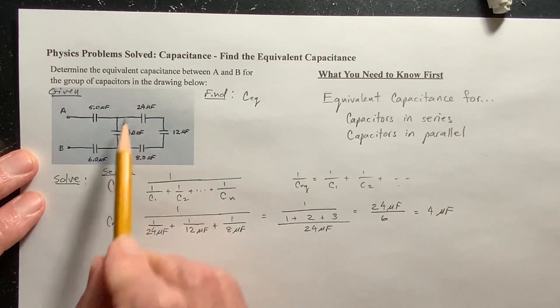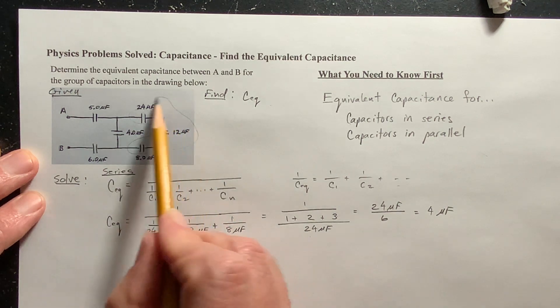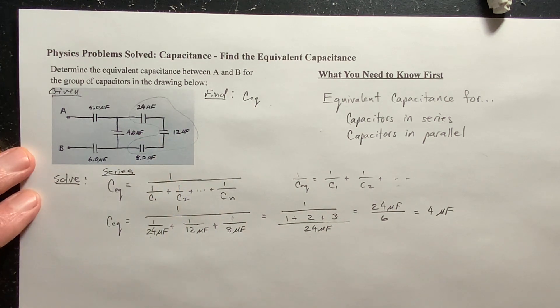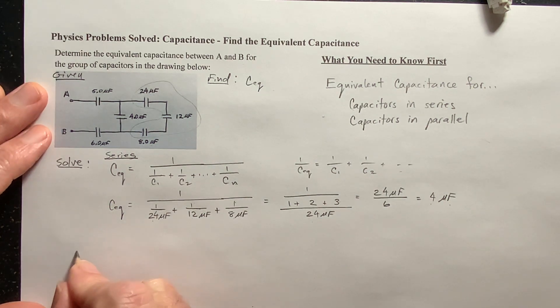24 divided by 6 is 4 microfarads. So these, what this means is that these three capacitors here can be replaced by one capacitor that has a capacitance of 4 microfarads. And so let's go ahead. Now, especially when you're learning this for the first time, take your time, use lots of paper, and redraw the circuit. Trust me, it'll be easier if you take the time to redraw the circuit. So let's do that.